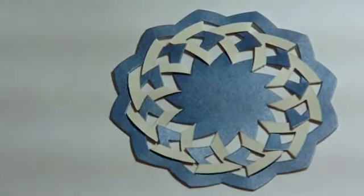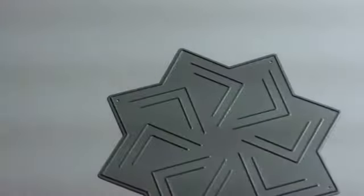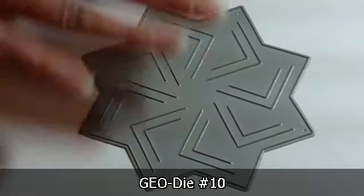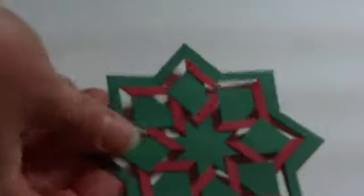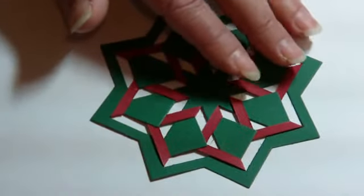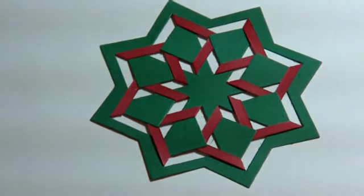This one was very easy. And then we jump up to geo die number 10. This is a really nice one. And I thought, kind of reminds me of a star. So I did it in some Christmas colors. I had some paper that was green on one side and red on the other. And that really made a nice image, I think.